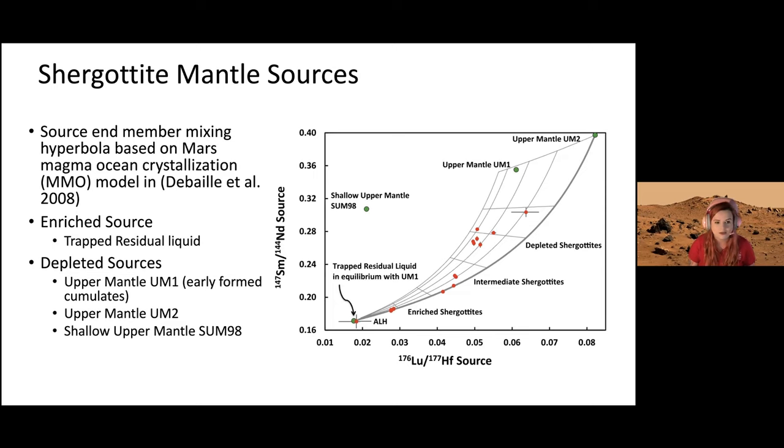This is based on the magma ocean crystallization model. As Mars started to crystallize, those early forming cumulates would be our depleted sources—on this chart labeled upper mantle one, two, and shallow upper mantle. Our enriched source would be that residual liquid that didn't crystallize first. This is another reason why shergotites are so great: they can tell you the timing of magmatic events and what's going on inside Mars.